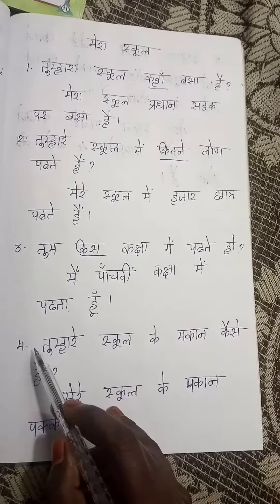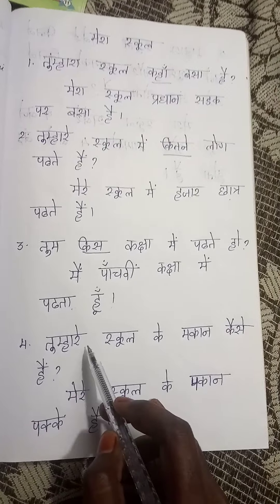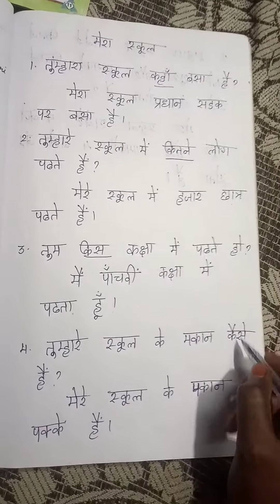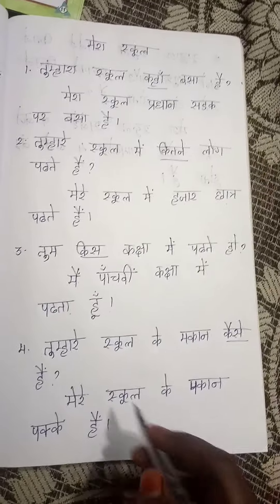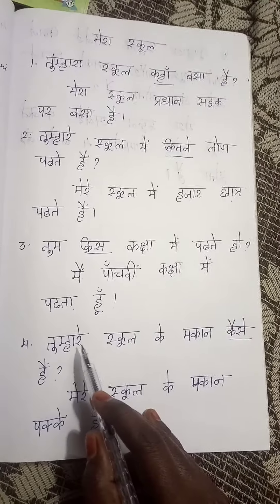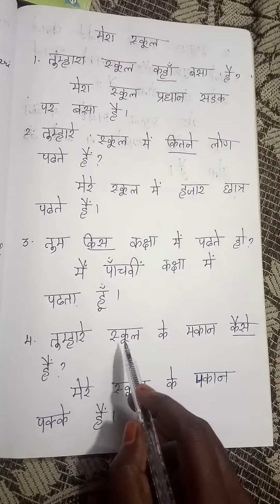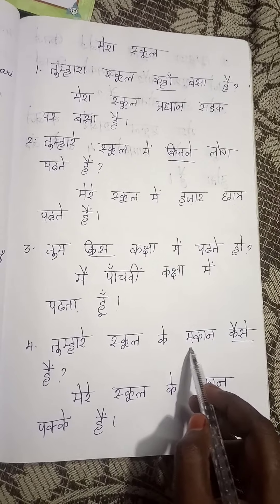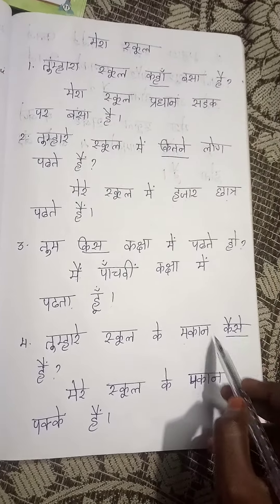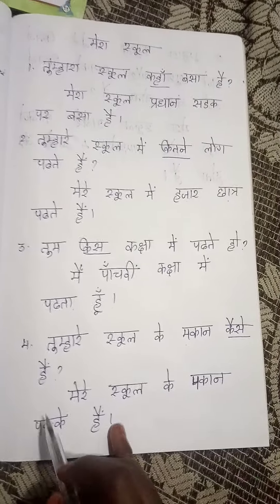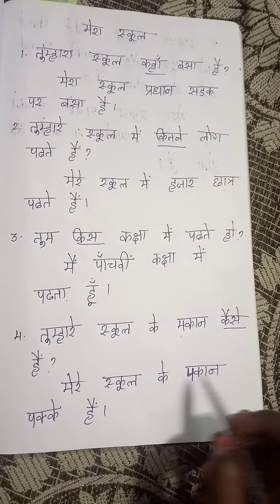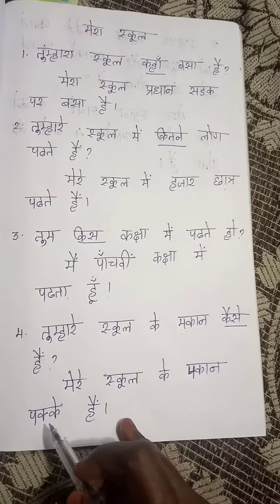Then the fourth question: Tumare school ke makaan kaize hai? Here kaize is the question word. This tumare will change as mere. Mere school ke makaan — here instead of this kaize, I will write pakke. Mere school ke makaan pakke hai.